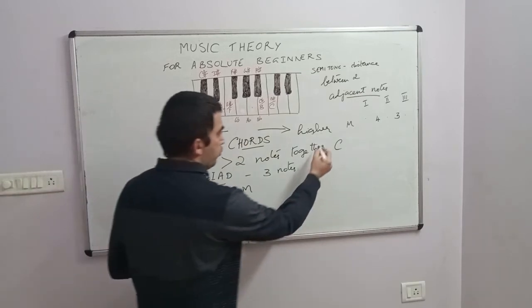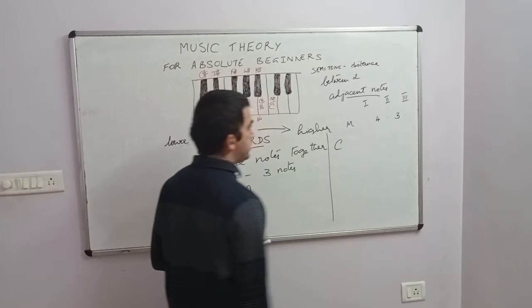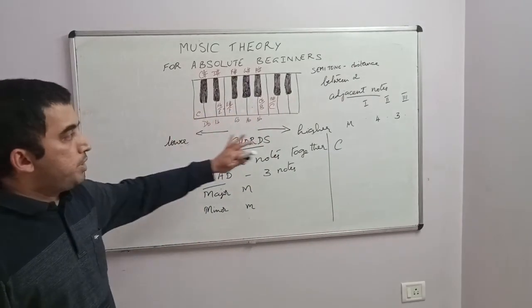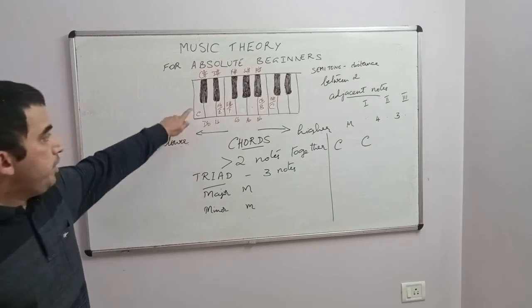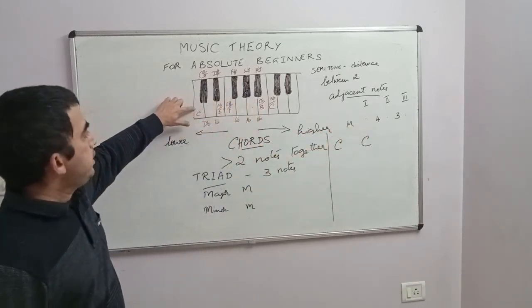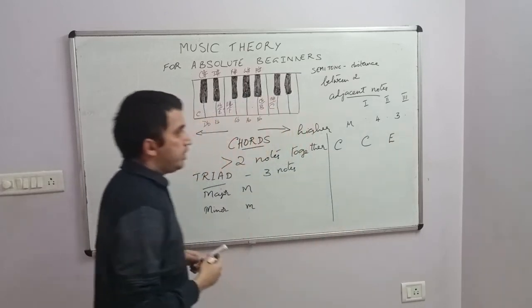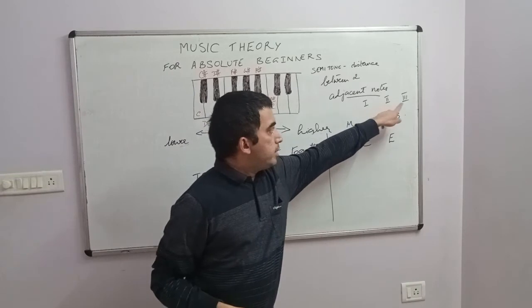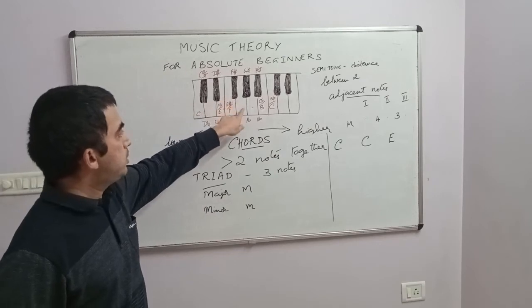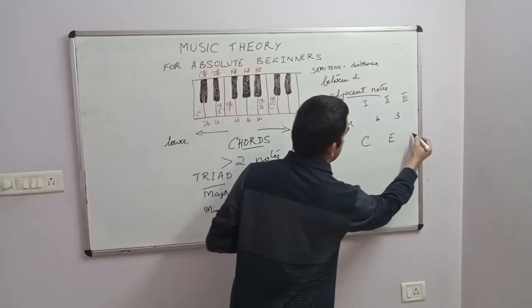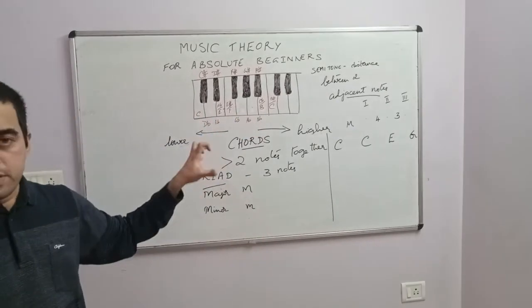Imagine you call it C major. Just like you wouldn't write a natural symbol in front of a note, you don't need to write 'C major' — you can just write C. So how do you construct a C major chord? The first note, because the name of the chord is C, will be C. From C you count four semitones: C, one, two, three, four — you reach the note E. Then from E you count three semitones: one, two, three — you reach the note G. So if you play C, E, and G together, that is called the C major chord.